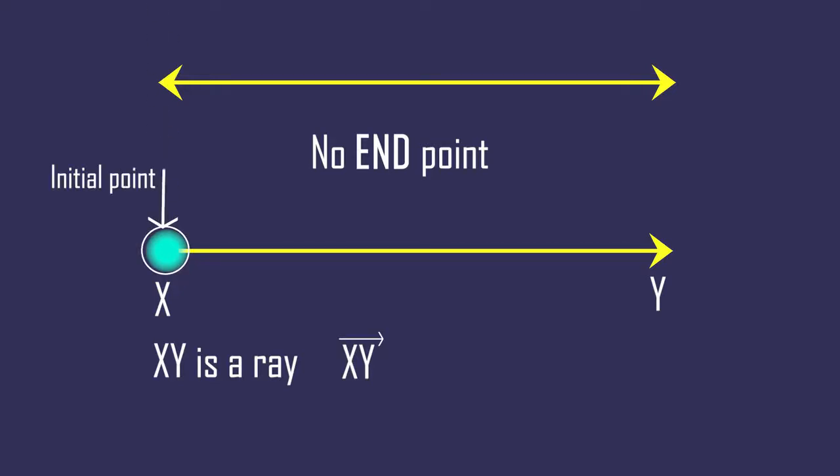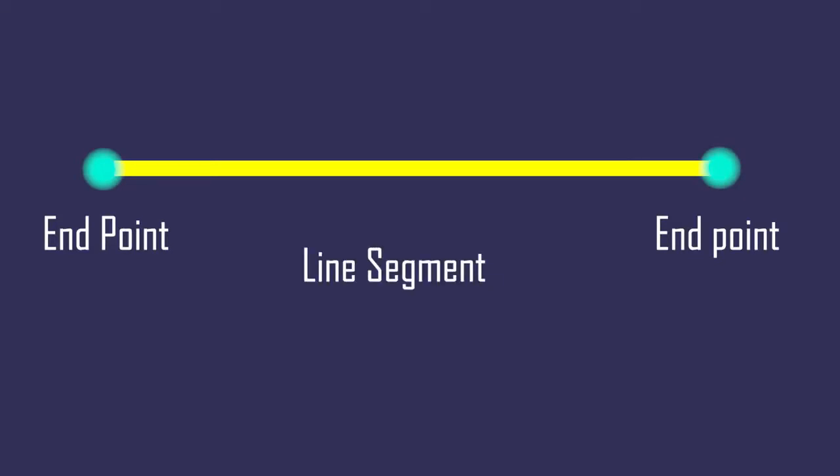Whereas if the line has fixed length and has both ends, then it is called line segment. Simply, line segment is a part of a line.